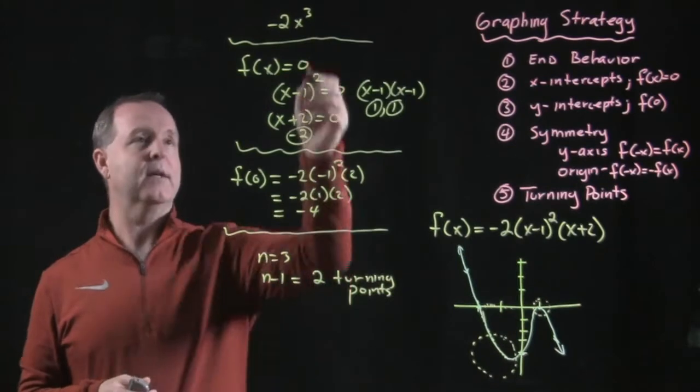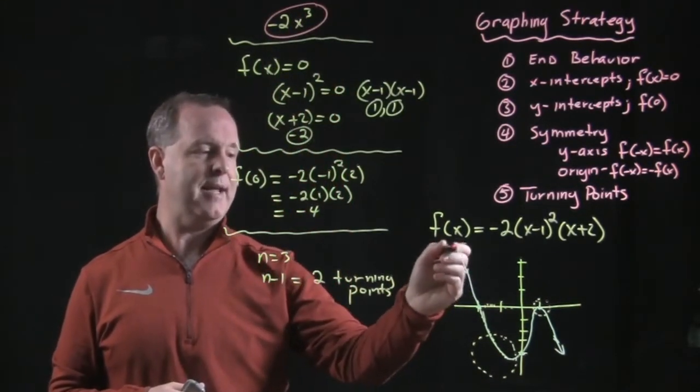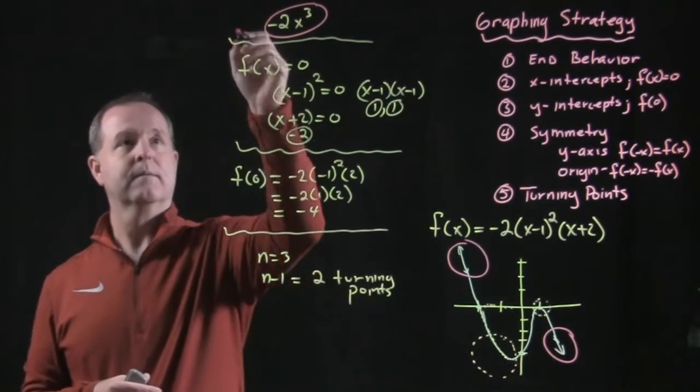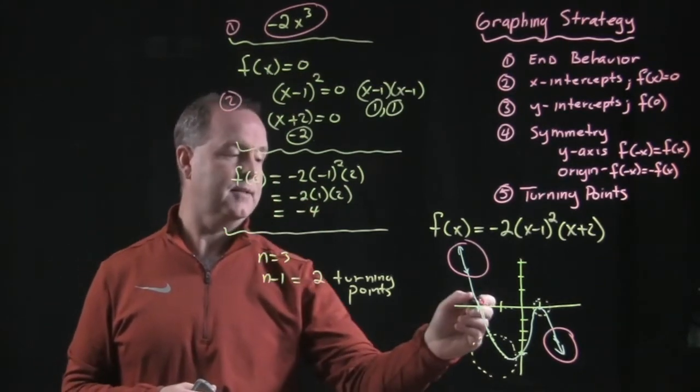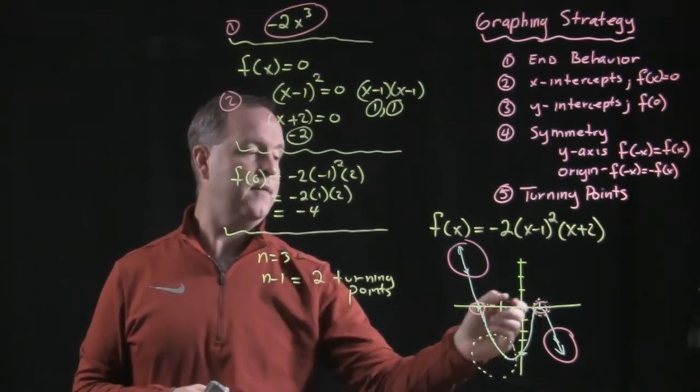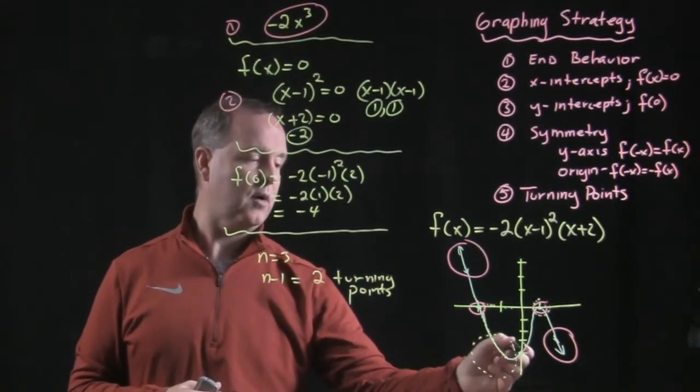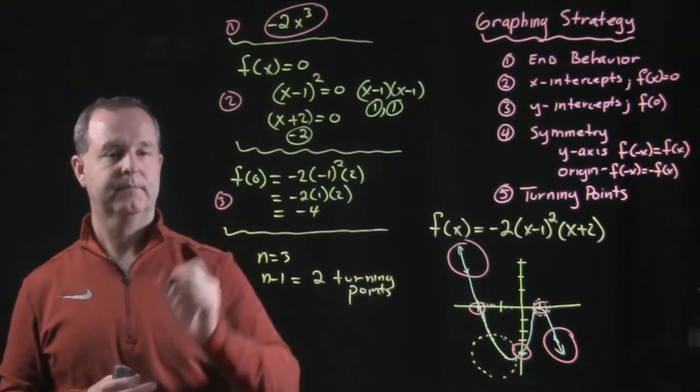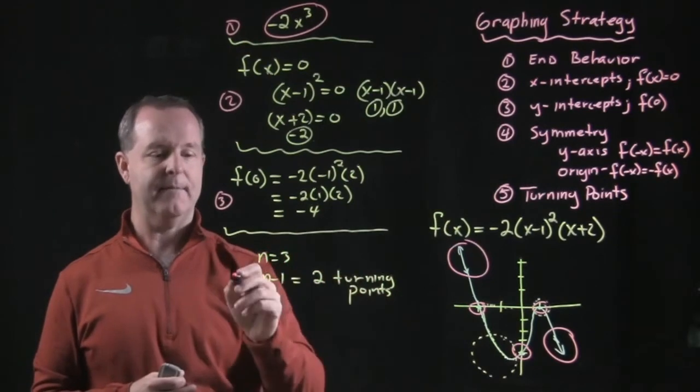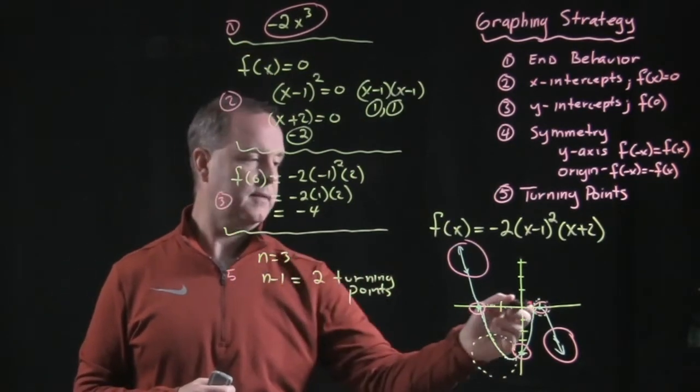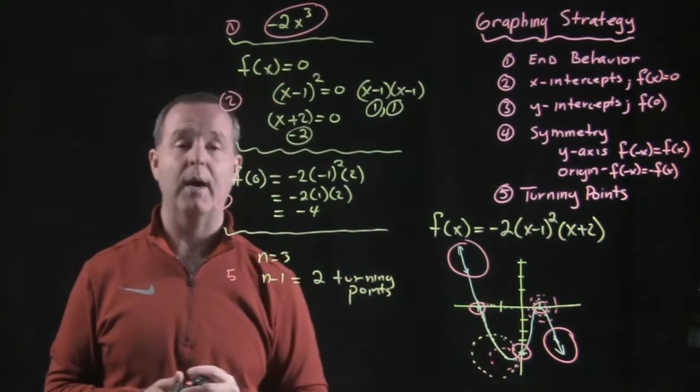First of all, we looked at its leading coefficient. And that told us its end behavior. The second thing that we found out is where does it cross the x-intercepts at? One there and one there. And that was my step two. Step three found out where it crosses the y-intercept at. Step four was symmetry. We didn't look at that. And then step five, its turning points. And then I have another turning point here and some other turning point somewhere around there.